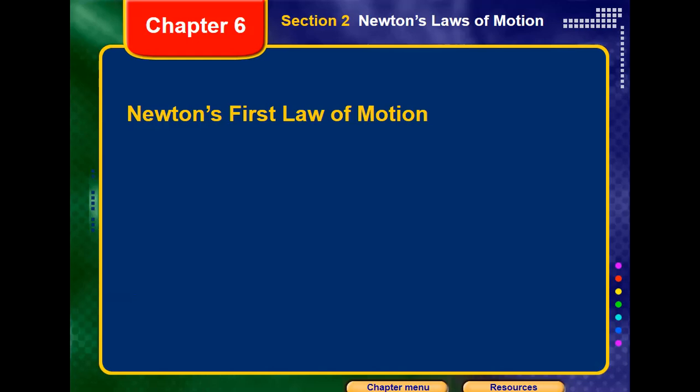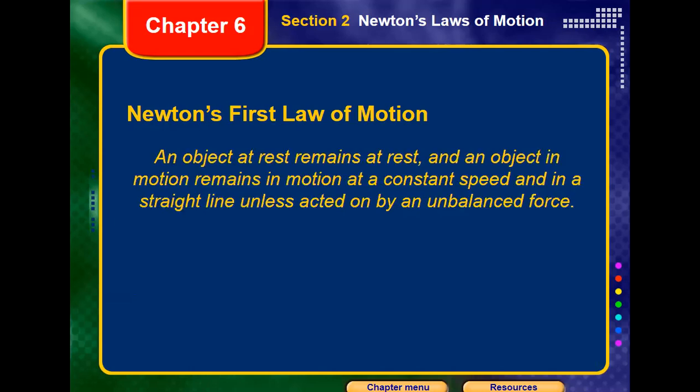The first law of Newton states that an object at rest remains at rest, and an object in motion remains in motion at constant speed and in a straight line unless acted on by an unbalanced force. For example, if you have a chair in your room, it is in a static position and it will stay as it is until you apply a force on it — push or pull it. So the object at rest stays at rest under balanced force, and will not leave its position until you apply an unbalanced force.